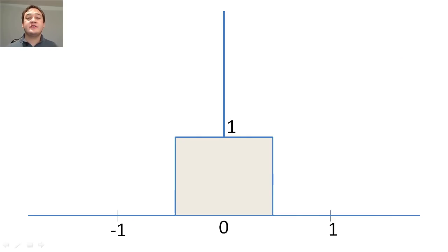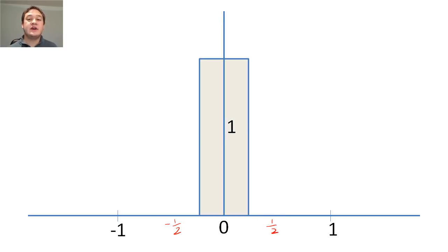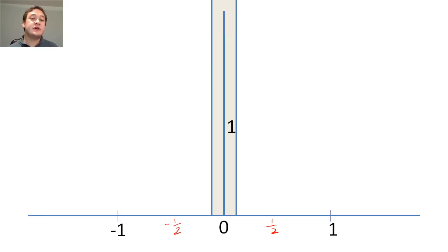To begin our discussion of the Dirac delta function, we will look at a rectangle that has an area of 1. If we decrease the width of this rectangle, we will need to increase the height of the rectangle to maintain the same area. As the width goes to 0, the height will approach infinity.